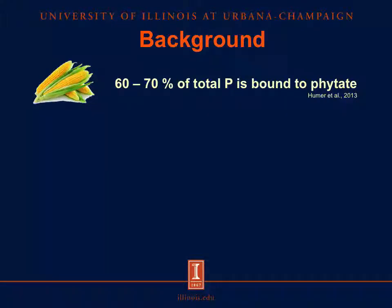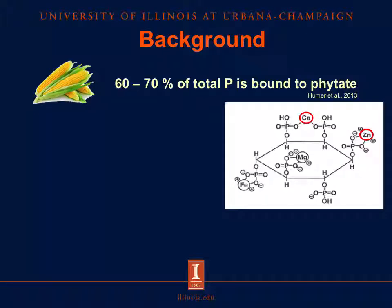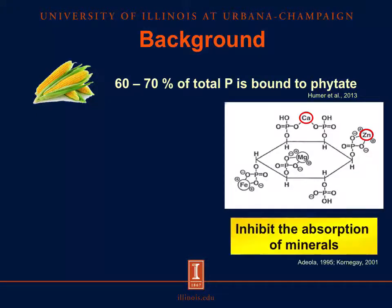Corn is one of the most important feed ingredients in swine diets, and between 60 to 70% of the total phosphorus is bound to phytate. Phytate is a mixed salt of phytic acid and consists of a myo-inositol ring with 6 phosphates. Phytic acid may form insoluble salts with several divalent cations such as calcium, zinc, iron, etc. Therefore, phytate can inhibit the absorption of these minerals.